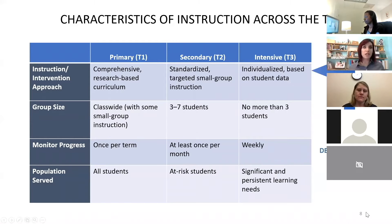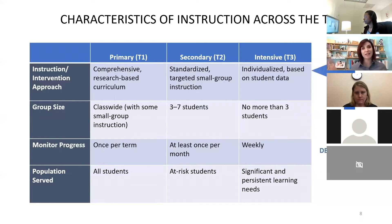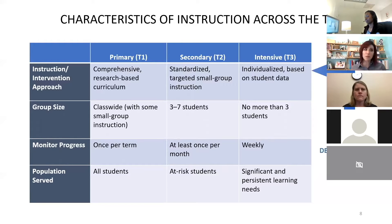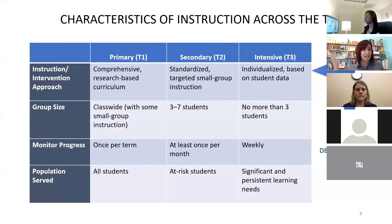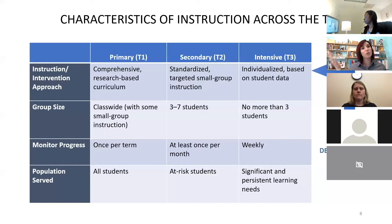When we talk about these tiers within MTSS, you'll see primary, secondary, and intensive — or tier one, tier two, and tier three. Every state categorizes it a little bit differently. Primary or tier one is core instruction. Tier two tends to be more targeted. When we talk about monitoring progress, that tends to be once per month. We often recommend using a standardized intervention with a progress monitoring tool that aligns with that intervention program. Many intervention programs create some kind of tool that goes along with it.